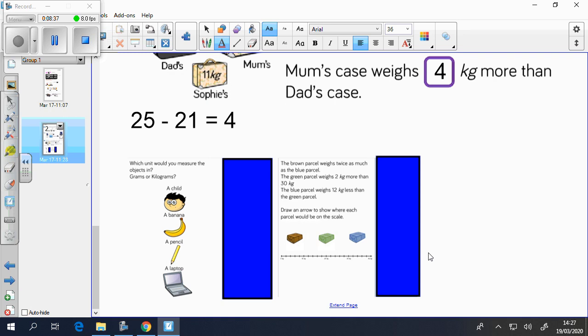Have a go at the reasoning and problem solving. So which unit would you measure the objects in, grams or kilograms? So you have a child, a banana, a pencil, a laptop. The brown parcel weighs twice as much as the blue parcel. The green parcel weighs 2 kg more than 30 kg. The blue parcel weighs 12 kg less than the green parcel. Draw an arrow to show where each parcel will be on the scale. Pause the video now to have a go.